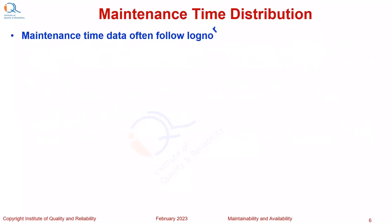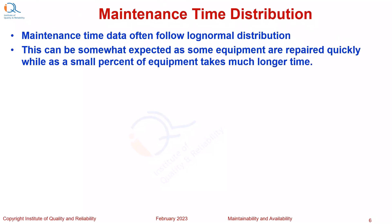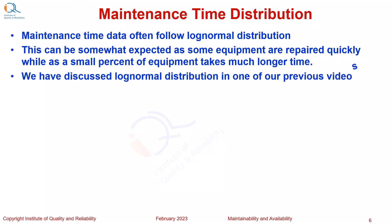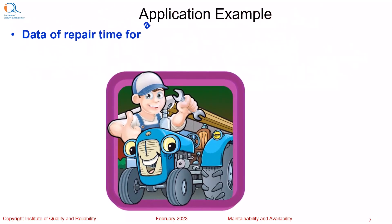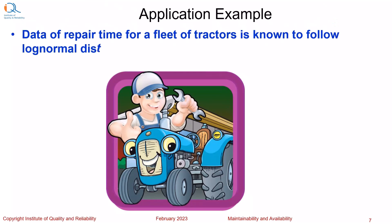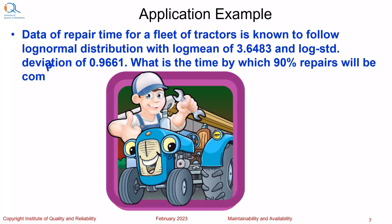Maintenance time data often follow log-normal distribution. This can be somewhat expected as some equipment are repaired quickly while a small percent of equipment takes much longer time. We have discussed log-normal distribution in one of our previous videos. Let us see a simple application example. Data of repair time for a fleet of tractors is known to follow log-normal distribution with log mean of 3.6483 and log standard deviation of 0.9661. What is the time by which 90% of repairs will be completed?